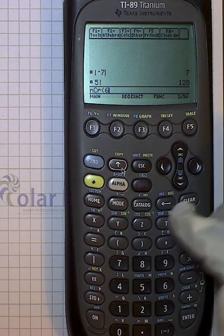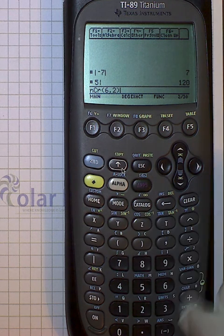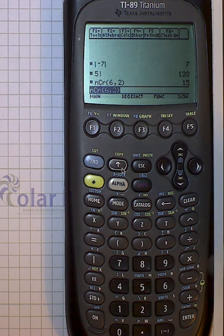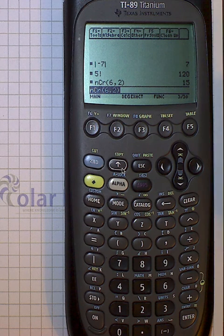So probability is six comma two, which is six choose two, after you choose NCR under math and then probability, you get 15. Yeah? All right, cool.